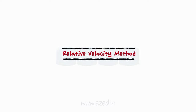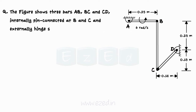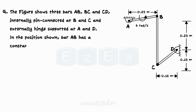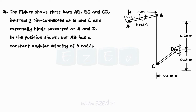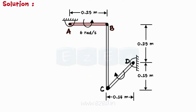Let's take an example and solve it by the relative velocity method. The figure shows three bars AB, BC, and CD, internally pin connected at B and C, and externally hinge supported at A and D. In the position shown, bar AB has a constant angular velocity of 6 radians per second anticlockwise. Find the angular velocities of bars BC and CD for the instant shown. Rod AB performs rotation motion about A, rod CD performs rotation motion about D, and rod BC performs general plane motion.